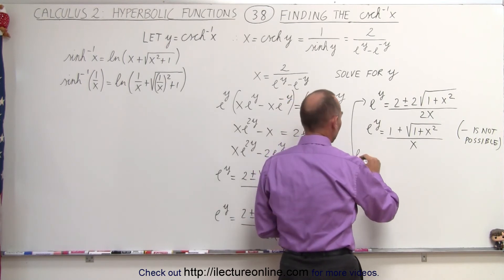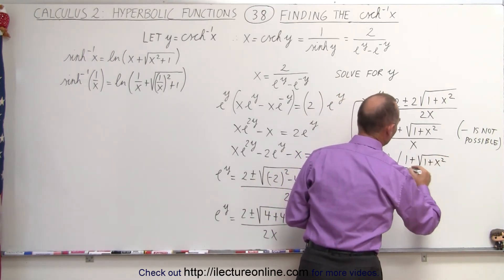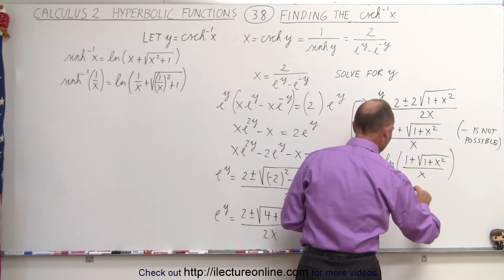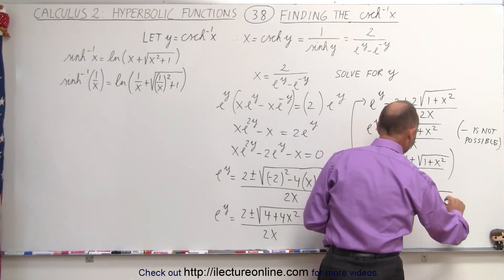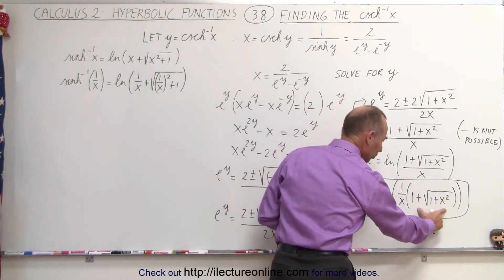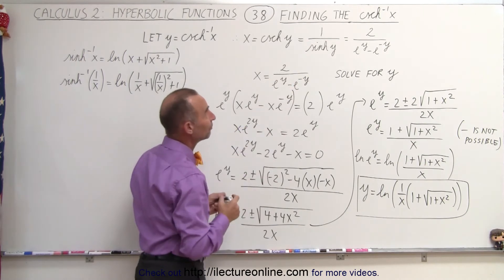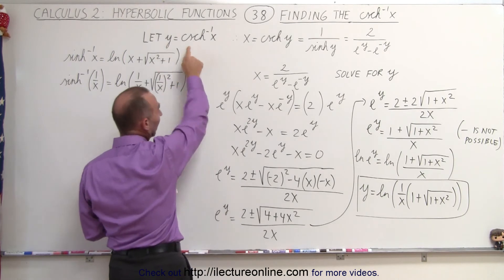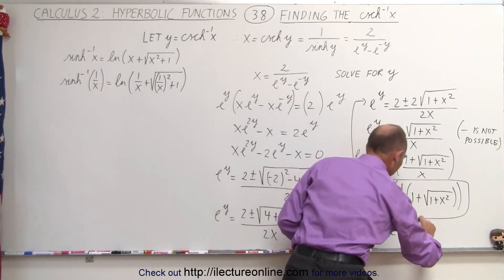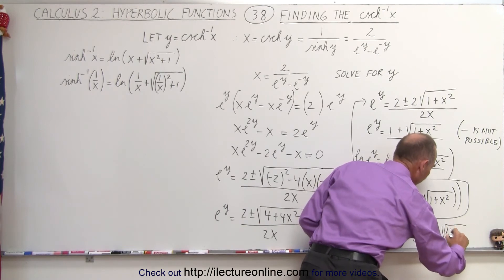So this ends up being our solution. We need to take the natural log of both sides, so the natural log of e to the y equals the natural log of 1 plus the square root of 1 plus x squared, divided by x. Therefore y is equal to the natural log of 1 over x times 1 plus the square root of 1 plus x squared. I like this format because we can separate the familiar expression and factor 1 over x on the outside. Since y was set equal to the inverse hyperbolic cosecant of x, we conclude that the inverse hyperbolic cosecant of x equals the natural log of 1 over x times 1 plus the square root of 1 plus x squared.